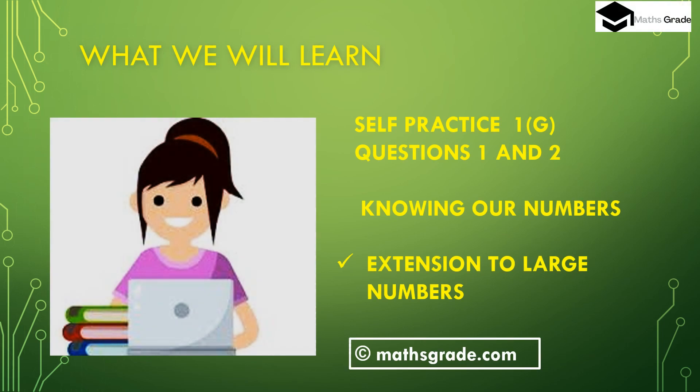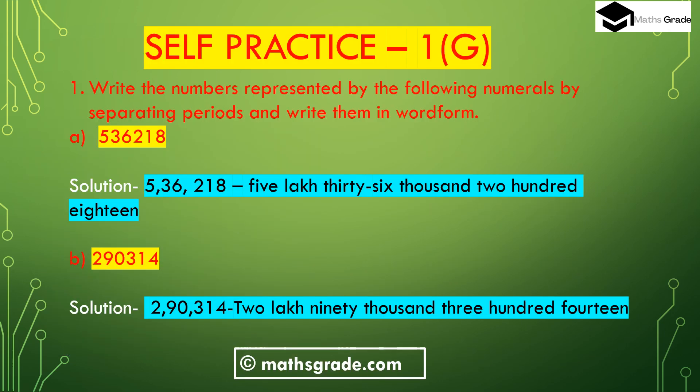Today we will learn and solve self practice exercise questions 1 and 2 of self practice 1G, chapter 1, 'Knowing Our Numbers'. The topic is extension to large numbers. Now we will solve question number 1: write the numbers represented by the following numerals by separating periods and write them in word form. The number is 536218.